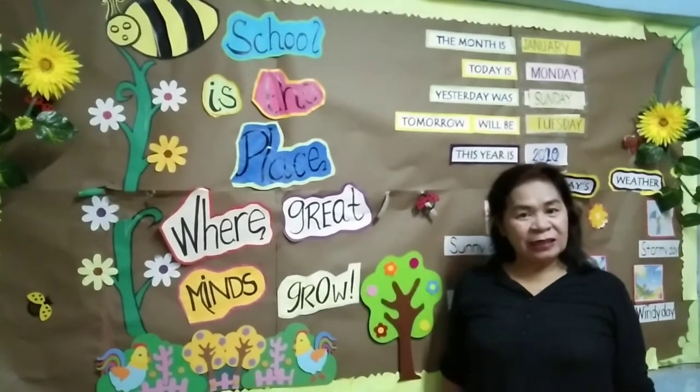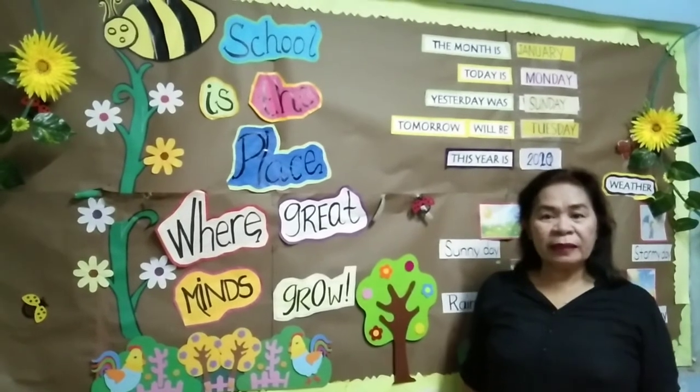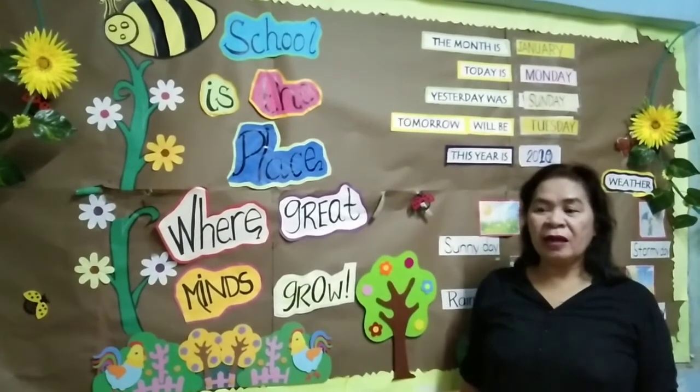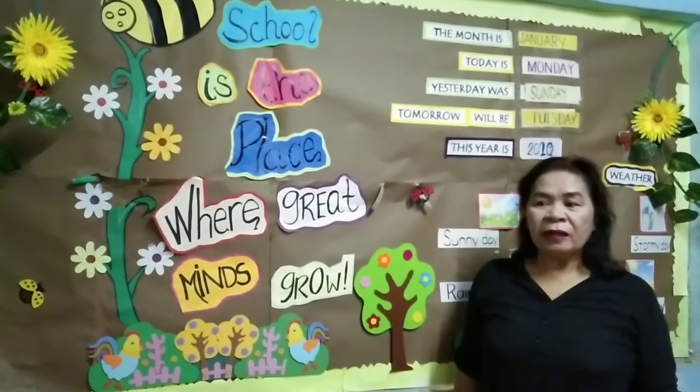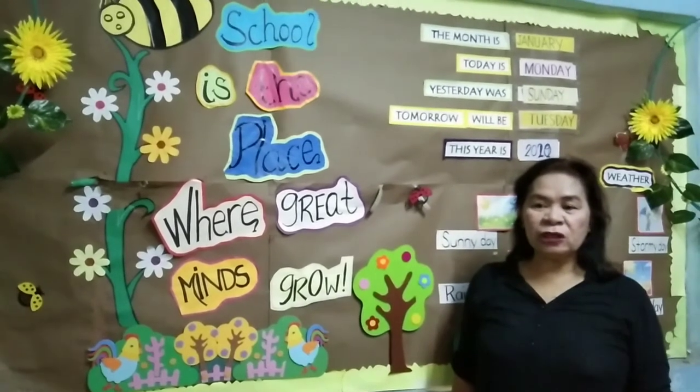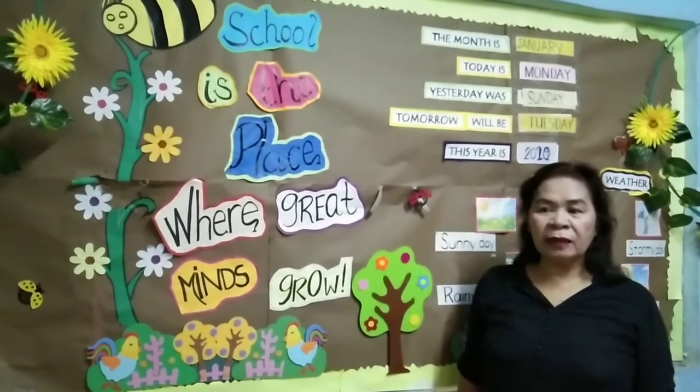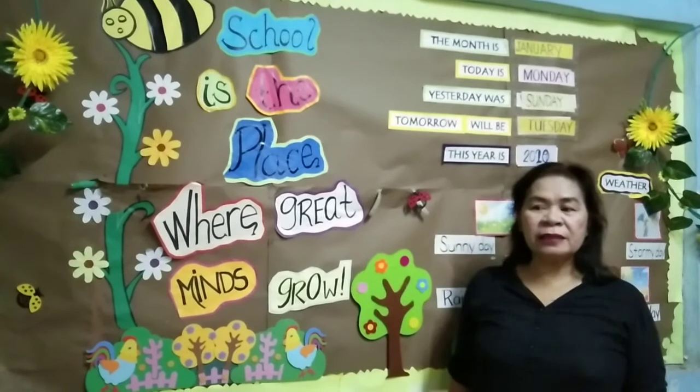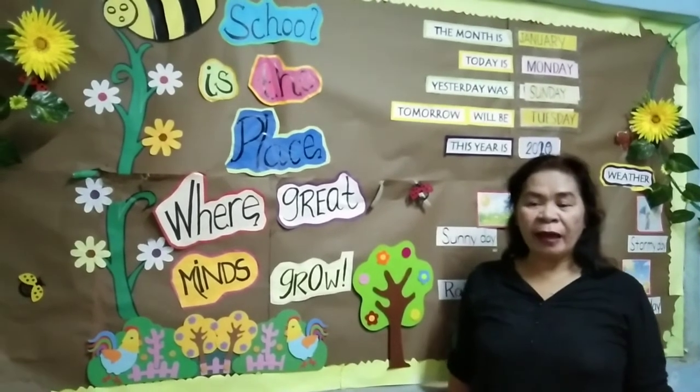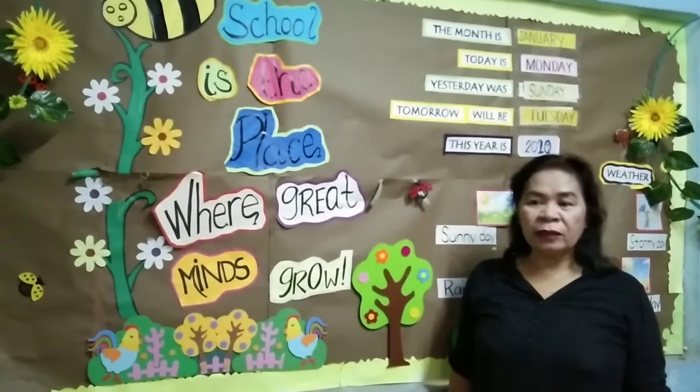So, let's start our lesson now. What is ordinal number? Ordinal number tells the exact position of an object, or it tells the position of an object rather than quantity.